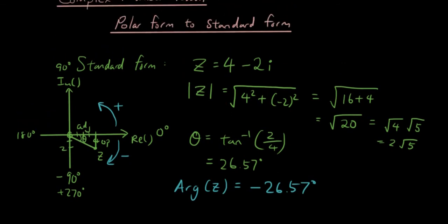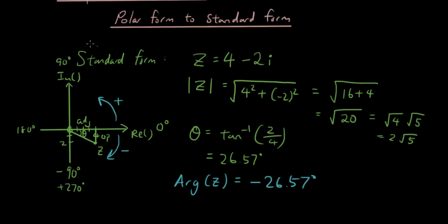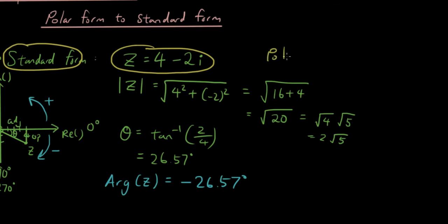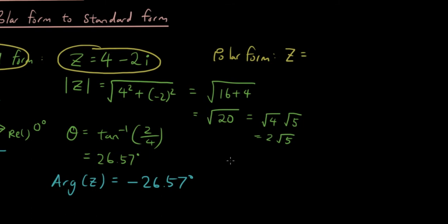So to express this complex number from standard form — z equals 4 minus 2i — in polar form, the answer is z equals the modulus of z, which is 2 square root of 5, and then we write cis, and then we write the argument, which is negative 26.57 degrees.